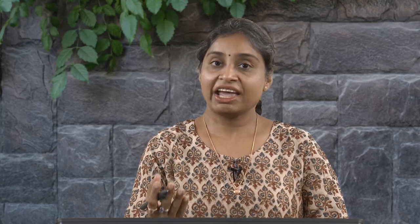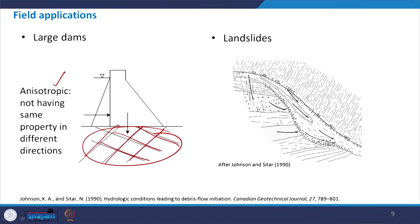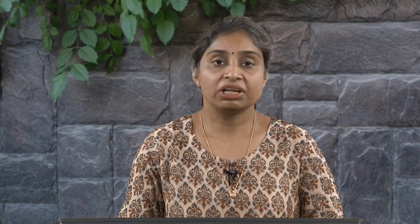Let us look at field applications. For a large dam founded on rock mass with sets of discontinuities, those discontinuities give rise to anisotropy, meaning properties differ in different directions. We need to know the discontinuities and their orientation — whether favorable or not — because the weight of the dam and water pressure from the upstream side must be transferred to the rock foundation, which must be strong enough to support all these forces.